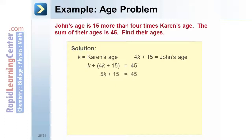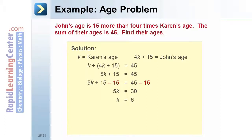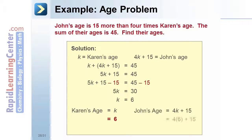Combine like terms to get 5k plus 15 equals 45. Subtract 15 from both sides: 5k equals 30. Divide both sides by 5 to get k equals 6. Karen's age is 6 years and John's age is 39 years.